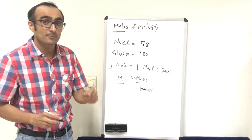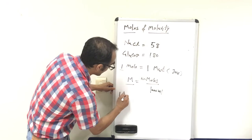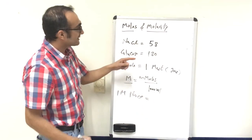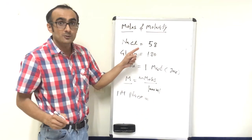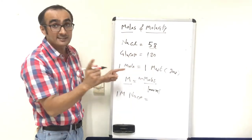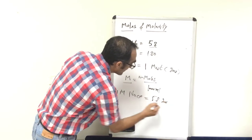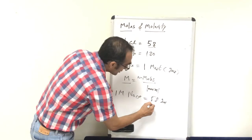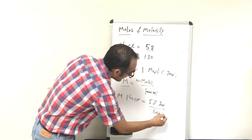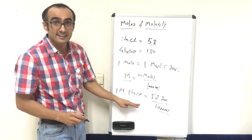Number of moles can be calculated from the definition of a mole. For example, to prepare a one molar NaCl solution, you take one molecular weight in grams — that is 58 grams of NaCl — weigh it out, and then dissolve it in 1000 ml. That way it becomes a one molar NaCl solution.